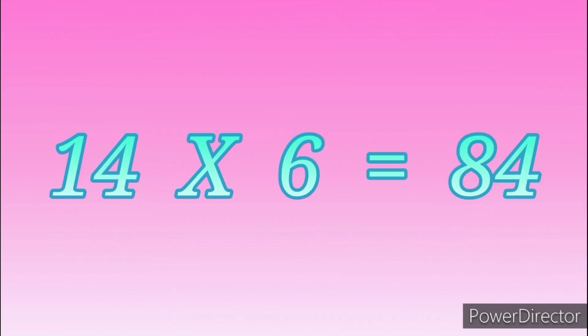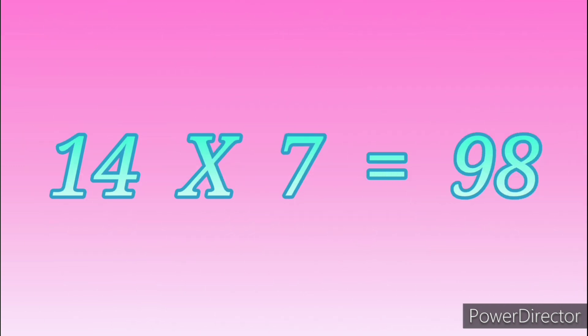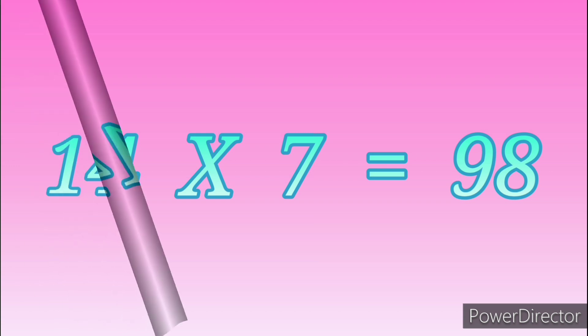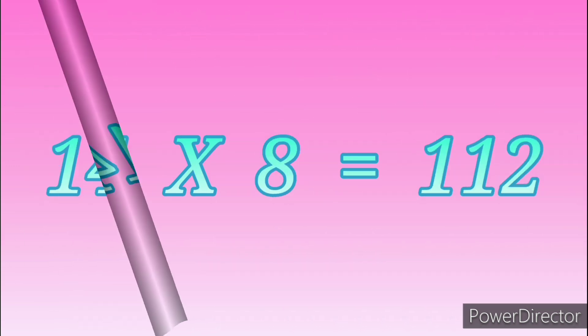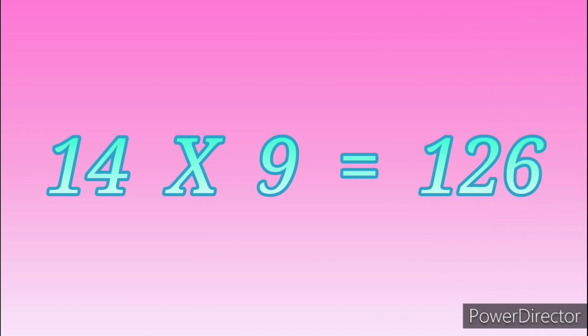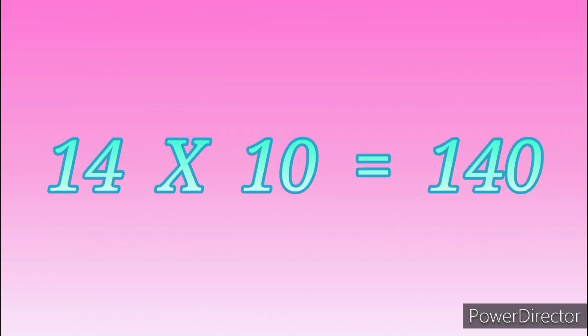Fourteen sixes are eighty-four. Fourteen sevens are ninety-eight. Fourteen eights are one hundred and twelve. Fourteen nines are one hundred and twenty-six. Fourteen tens are one hundred and forty.